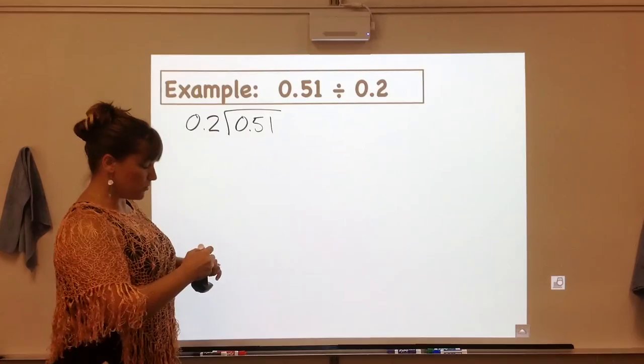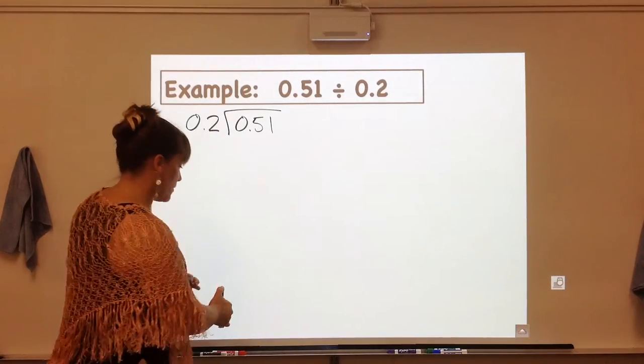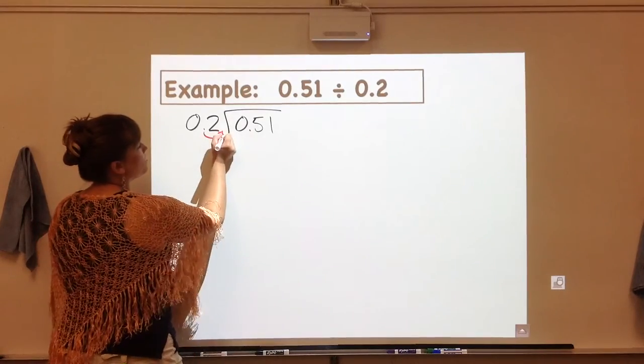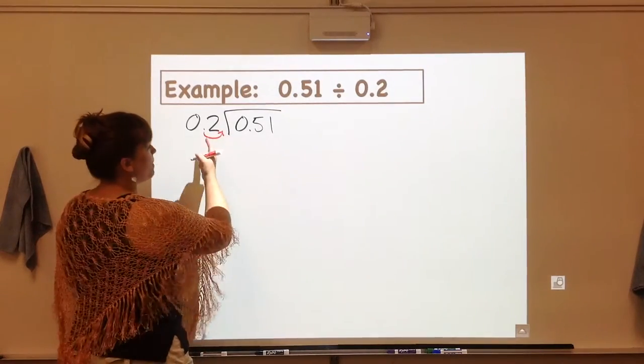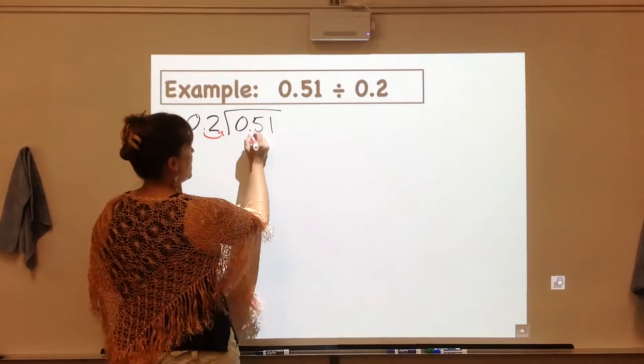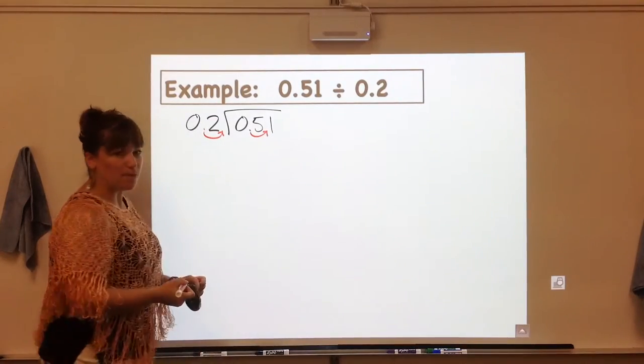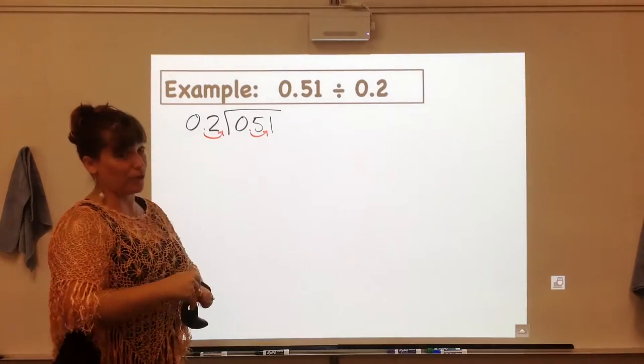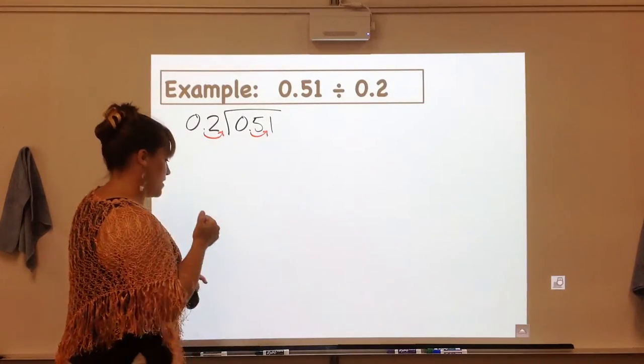Now we have to do the multiply by power of 10, so when we multiply by 10 the decimal point moves over one spot that makes it a 2. We like that. We have to do the same thing for the dividend. Notice I drew two arrows and they're red so that they stand out.